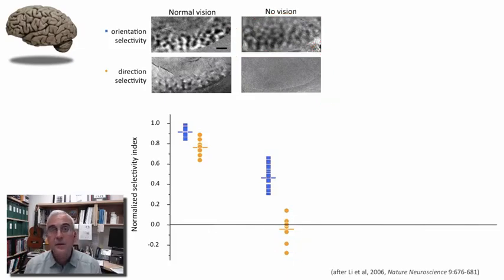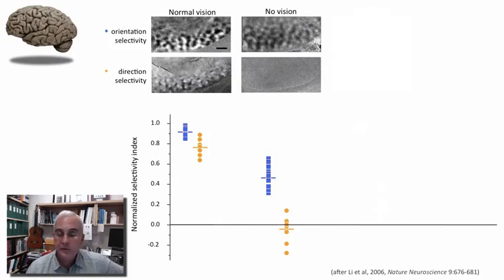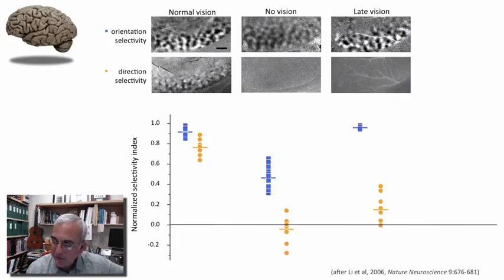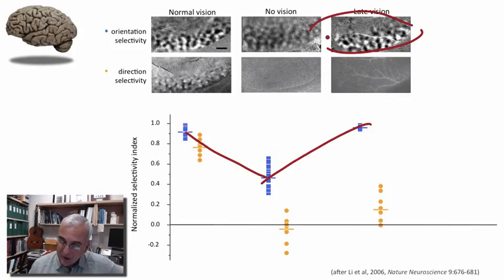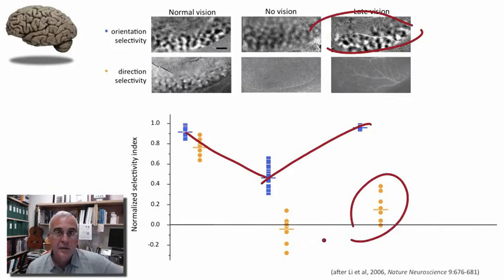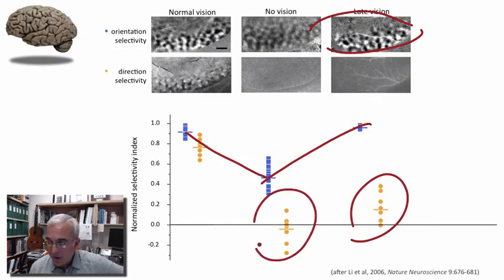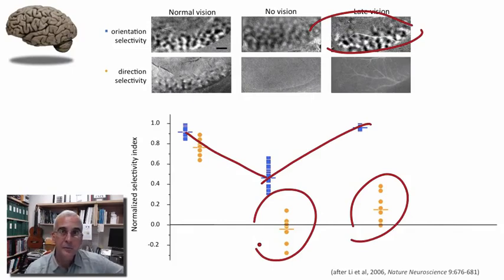We wanted to know at what time in development this network was especially sensitive to the onset of visual experience. What we found is that if we deprived animals of vision for the first couple of weeks after eye opening and then gave them what we might call late vision, we found that their orientation preference maps returned to their full developmental strength. You can see that by eye with the robust dark and light distribution of orientation domains in the maps from these animals. However, the data representing the development of direction selectivity really remained no different than those that were completely deprived throughout the developmental epoch, and statistically speaking not different from maps taken from animals with no visual stimulus.